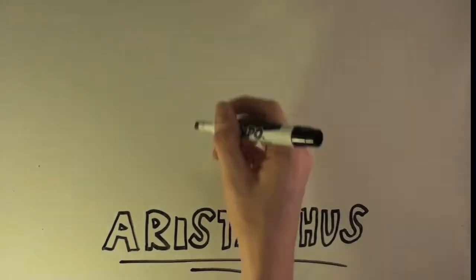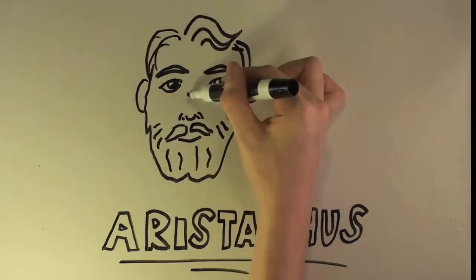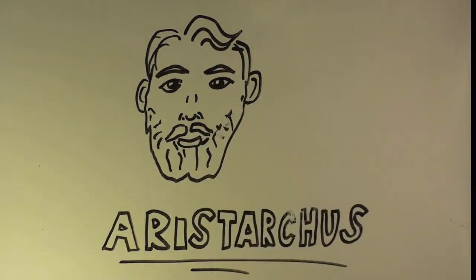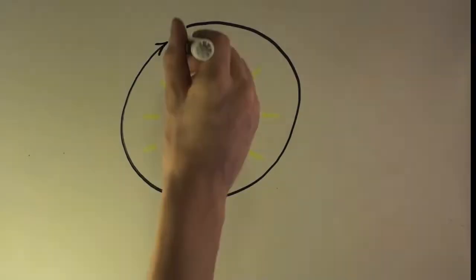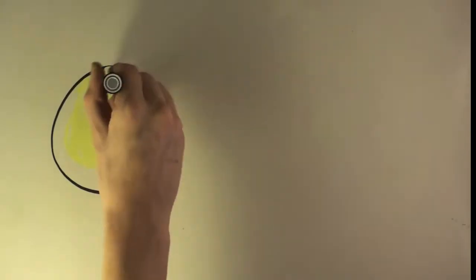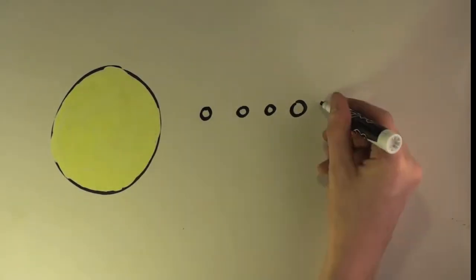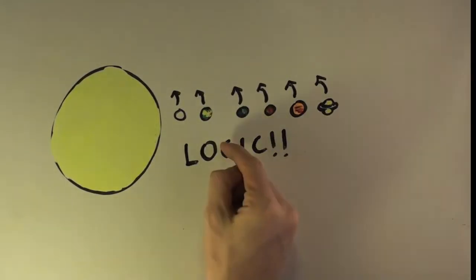Interestingly enough, around the same time, Aristarchus, another Greek thinker, theorized that the sun was the center of the universe. He did so by calculating the size of the sun, the Earth, and the planets. Upon realizing that the sun was the largest of the spheres by far, Aristarchus concluded that it was only logical for the Earth and the planets to go around the sun.